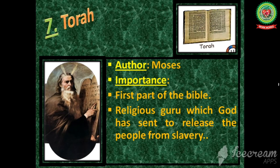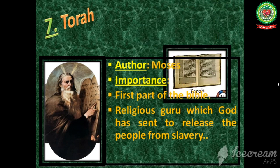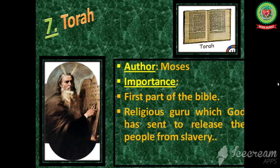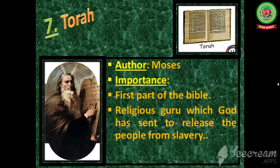The seventh is the Torah. The Torah shows the first part of the Bible. It is written by Moses. Moses was a Jewish prophet — a prophet means a religious guru whom God has sent to release the people from slavery.